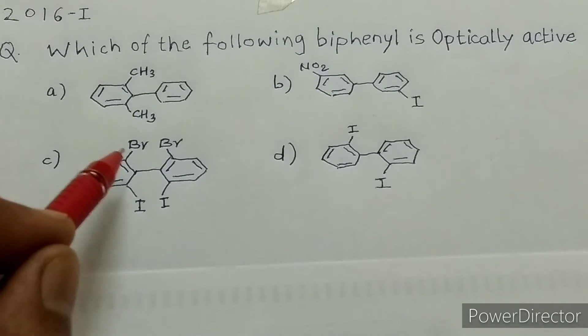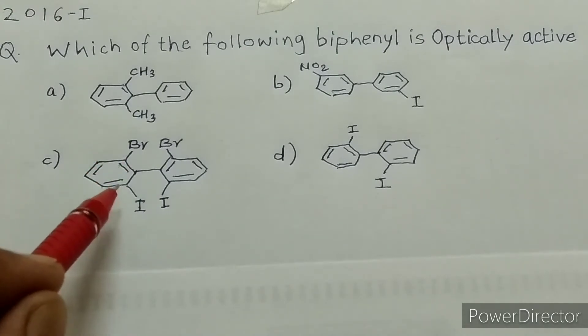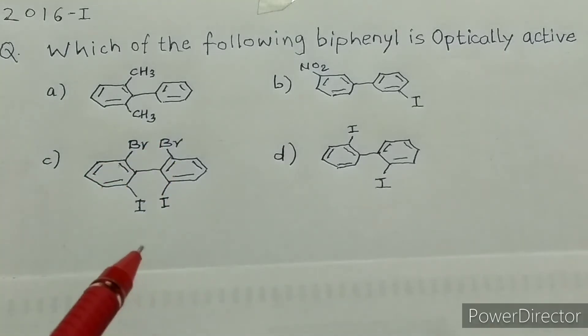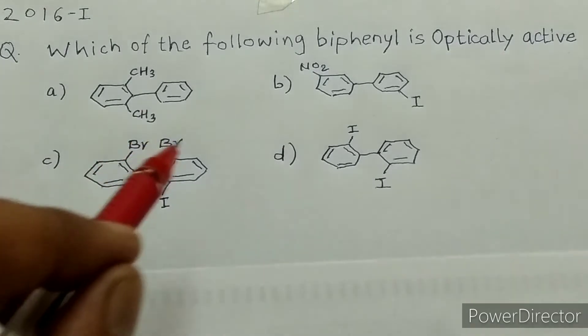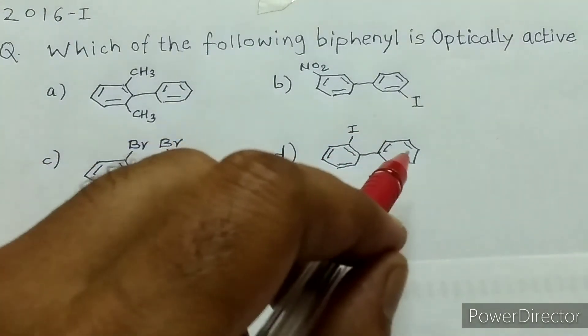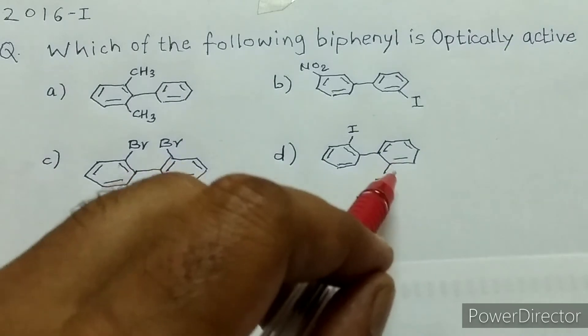Now let's look at option C. Here there are two ortho substitutions, and on this ring also there are two ortho substitutions. So we have to consider this one. And in option D,